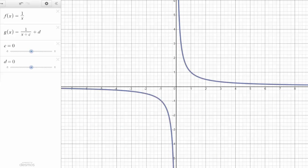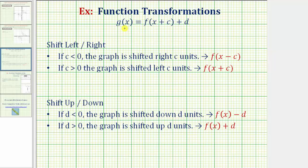To summarize these two translations, if we write g of x in terms of f of x: when c is negative or less than zero, the graph is shifted right c units, and g of x is in the form f of the quantity x minus c. If c is greater than zero, the graph is shifted left c units, and g of x is in the form f of the quantity x plus c. If d is negative, the graph is shifted down, and g of x is in the form f of x minus d. If d is positive, the graph is shifted up, and g of x is in the form f of x plus d.